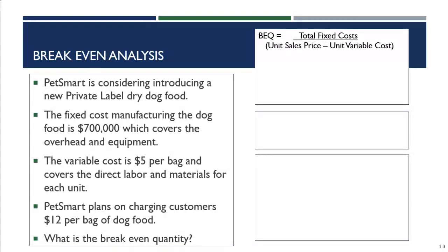Here's the equation: Break-even quantity equals total fixed costs divided by (unit sales price minus unit variable cost). We're looking for the quantity at which revenue equals total costs — that is, where profit equals $0. Our fixed costs are $700,000, our selling price is $12 per bag, and our variable cost is $5 per bag. So the equation is: $700,000 ÷ ($12 − $5).